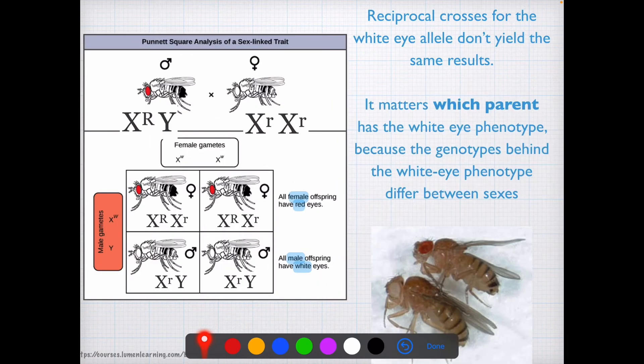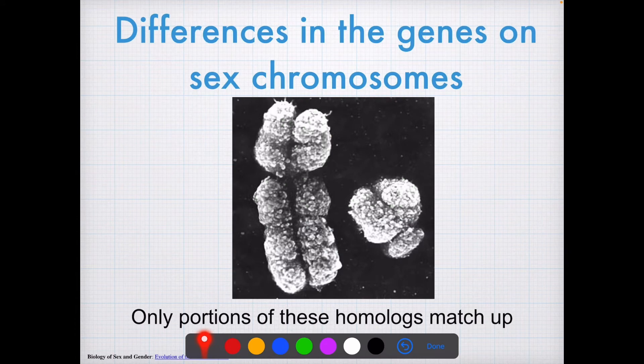Because, again, if we look back here, you see that the Y chromosome is a lot shorter than the X chromosome. So it's literally missing a lot of the genes that are on the X chromosome.